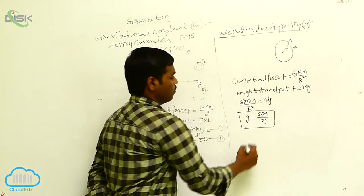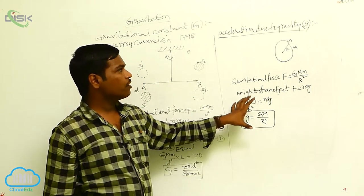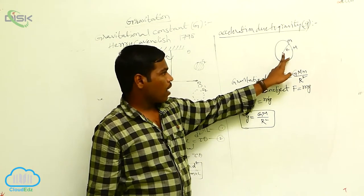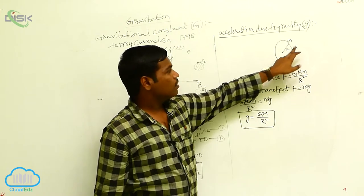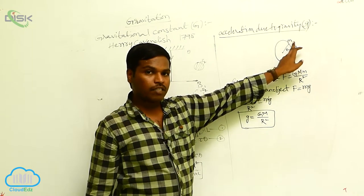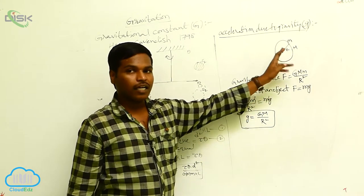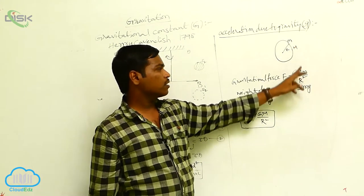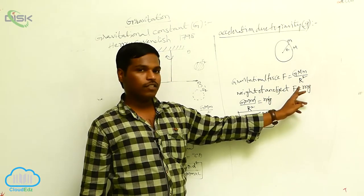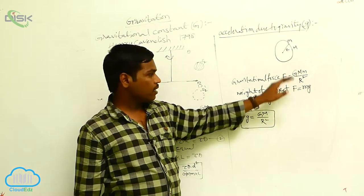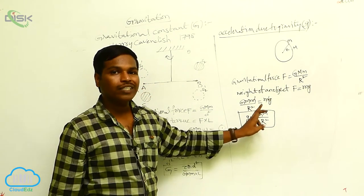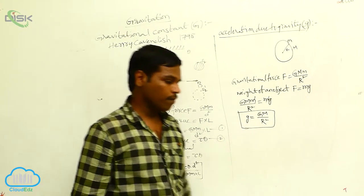Then we will get g = GM/R². This is the acceleration due to gravity on the surface of the Earth. So, considering capital M as mass of the planet and small m as mass of the object on the surface, the gravitational force between them is GMm/R², and equating with weight F = mg gives g = GM/R².